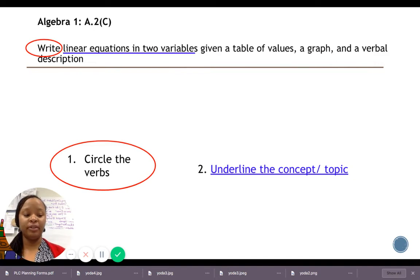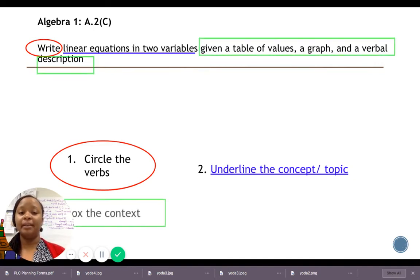So the next part is the most important part to me. It's the contextual information. So I figure out what the contextual information is and I box it in. In this case, it's given a table of values, a graph, and a verbal description.